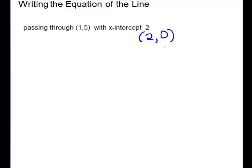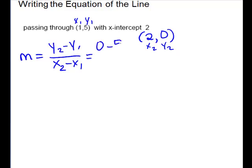Alright. So now we have 2 points. We can find slope. So change in y's over change in x's. Plug in. So we have 0 minus 5 over 2 minus 1 gives us negative 5 over 1 or negative 5 for slope.